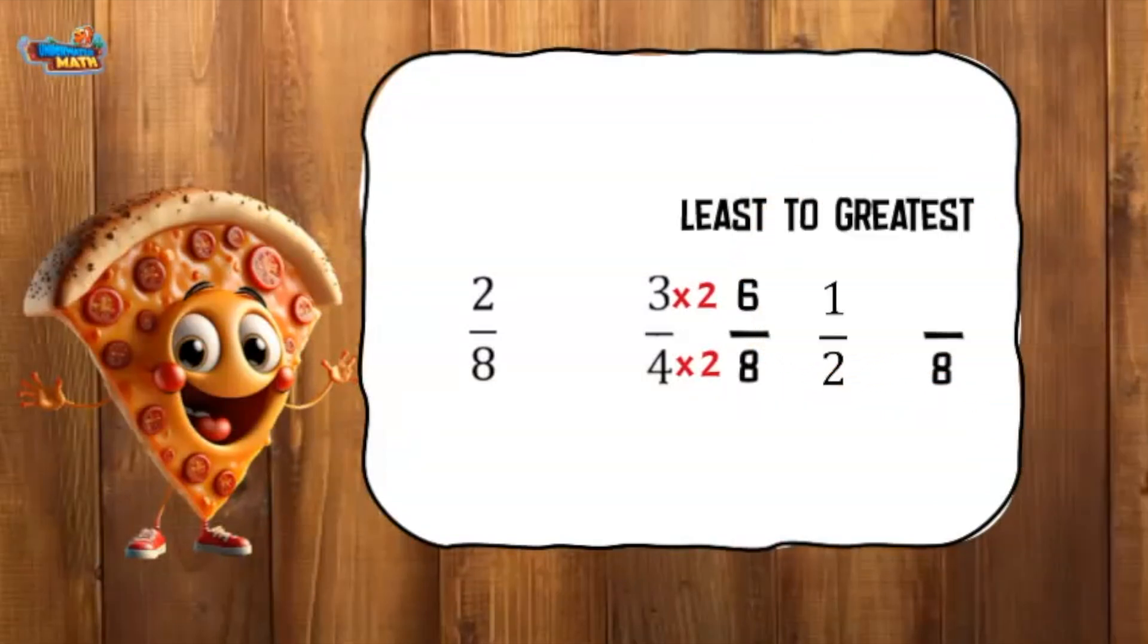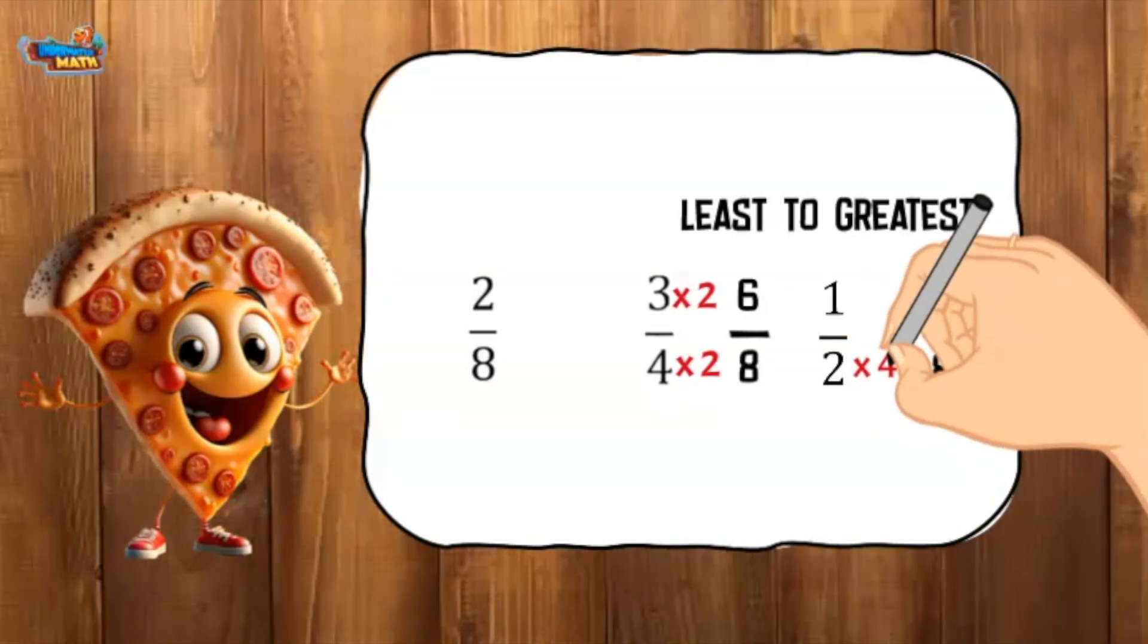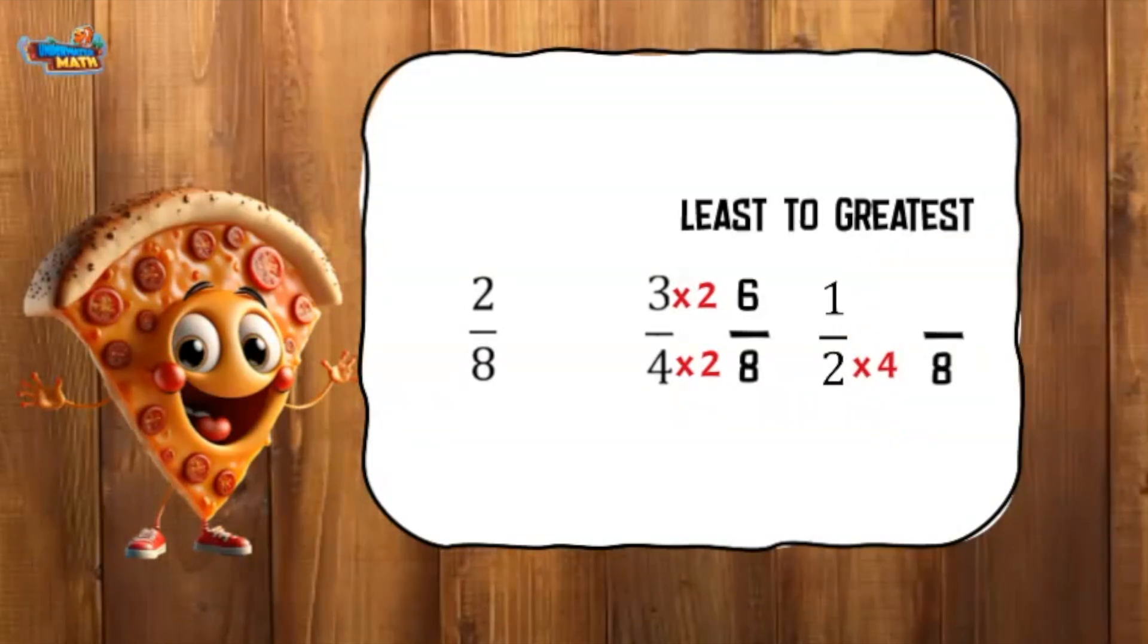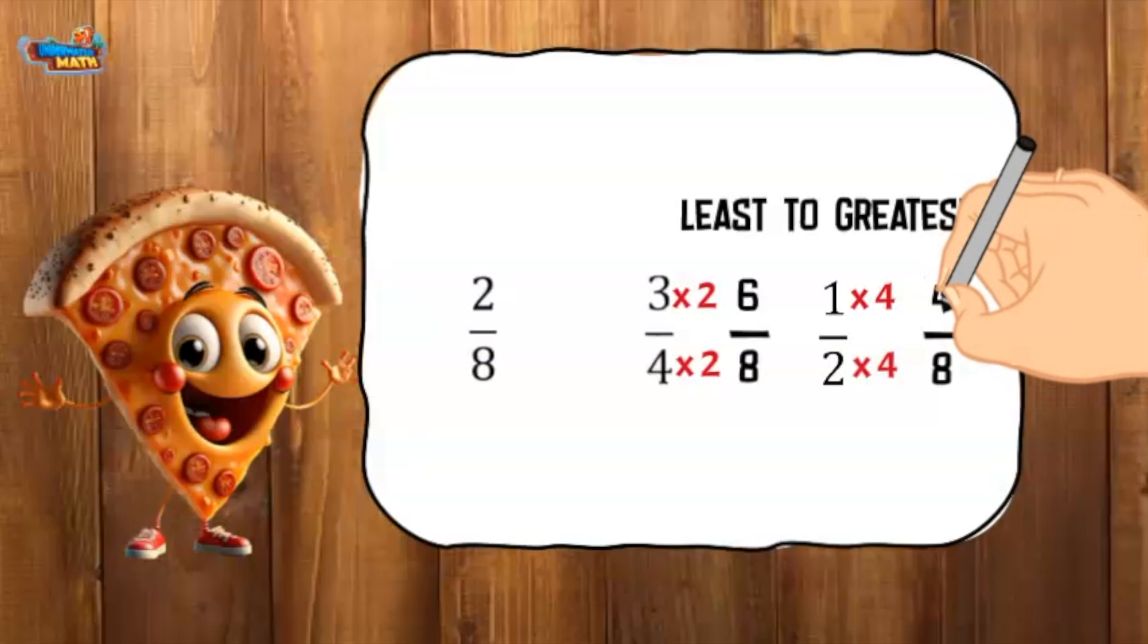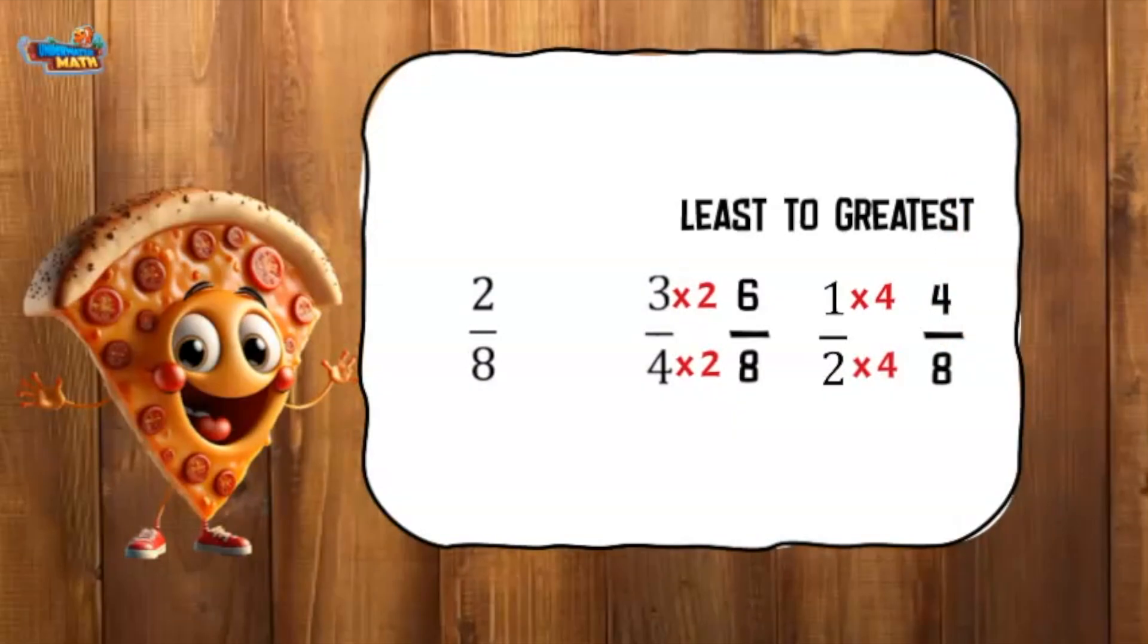Looking at the final fraction. Two times four equals eight. I did it to the bottom, so I need to do it to the top. One times four equals four. Now we have the equivalent fraction of four eighths.